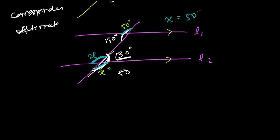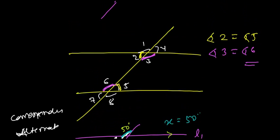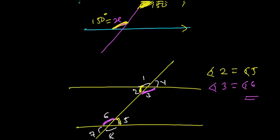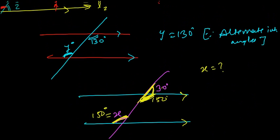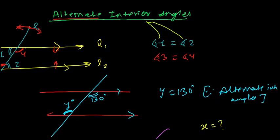In the next video, we will be doing co-interior angles — the sum of co-interior angles is 180°. Later, we will be doing a lot of practice of alternate interior angles. Don't worry, we are going to have a very good concept in geometry. See you in the next video. Goodbye.